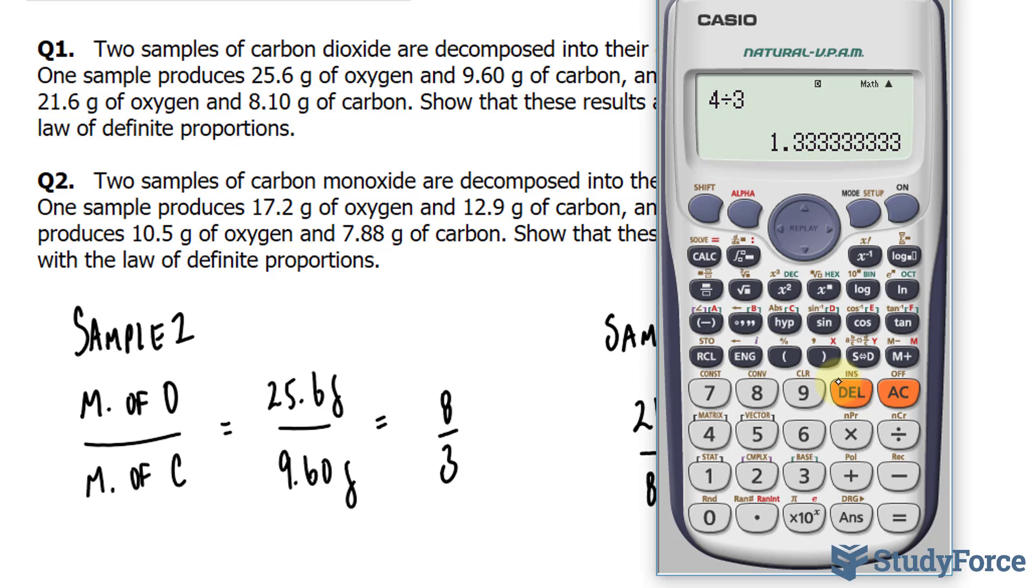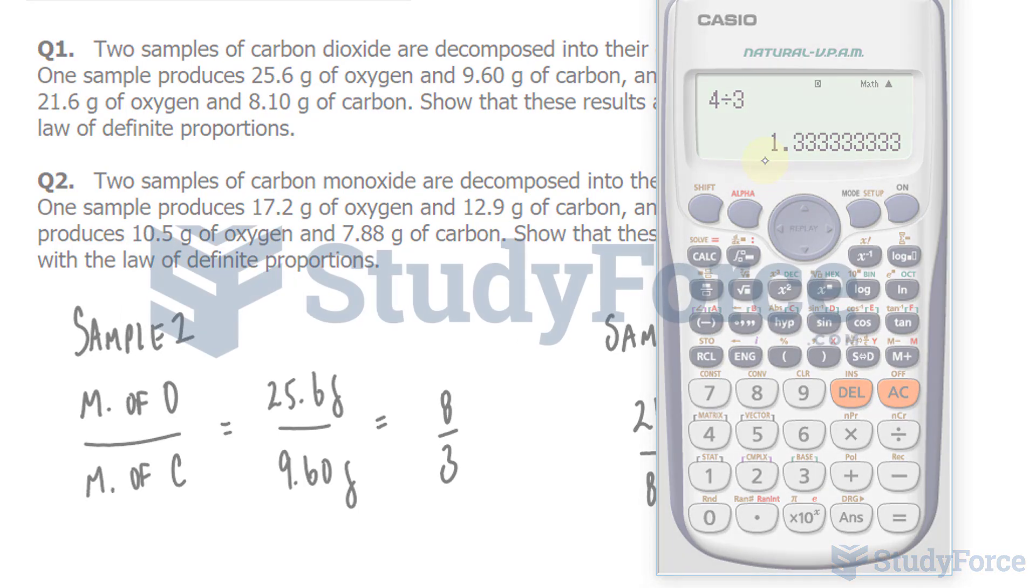Now, I do understand that there is a slight discrepancy. This one is exactly 1 and a third, whereas the other one is slightly off. Remember that these values are measured values. So there's always room for error while you're taking the measurements. So we'll assume that's the cause of this discrepancy.